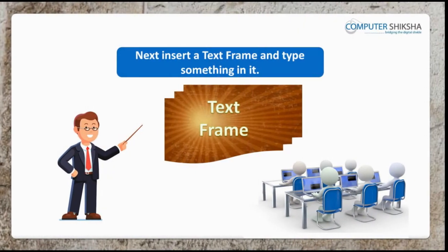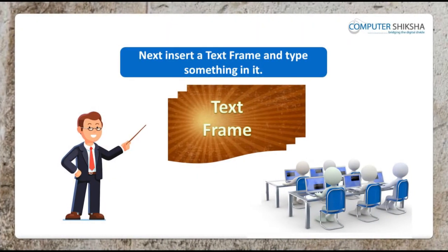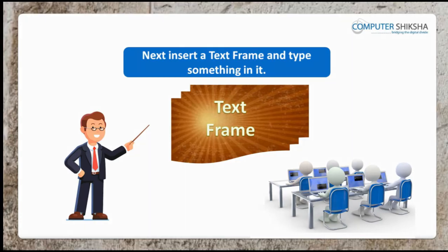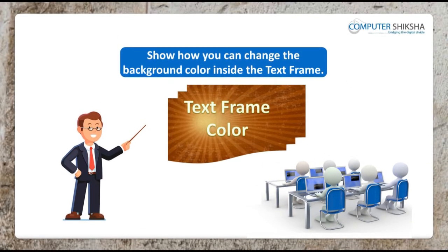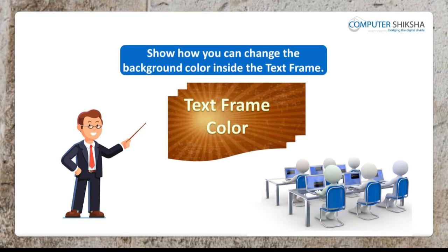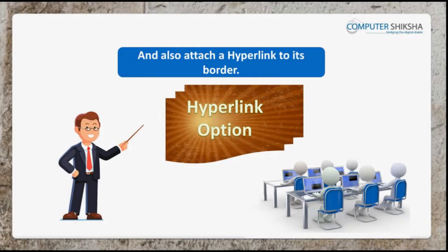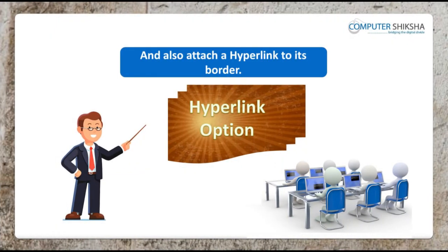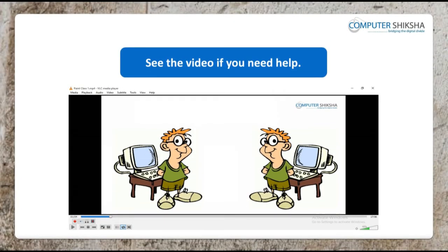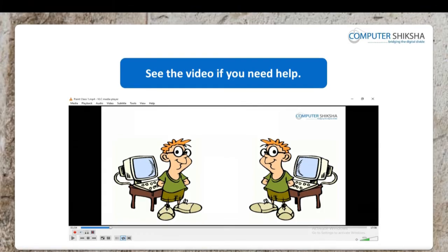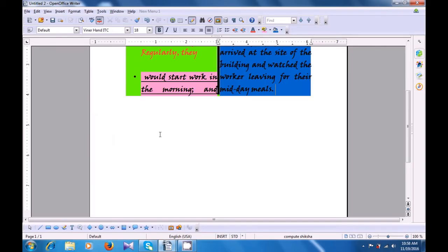Next, insert a text frame and type something in it. Show how you can change the background color inside the text frame and also attach a hyperlink to its border. If you have a problem, watch the video. Let's watch this video now and practice the options of getting a text frame on a writer page.